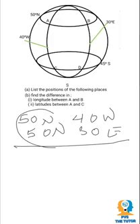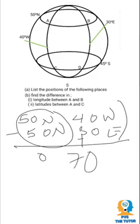But the longitudes are in different hemispheres, so you add them. Two places in different hemispheres give you 70 degrees as the difference in longitude between A and B.